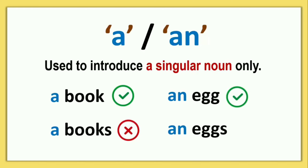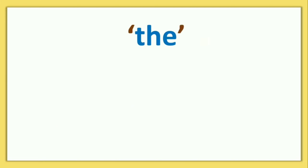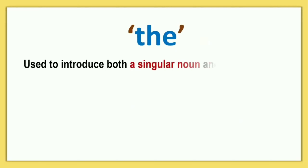Singular noun के लिए, एक ही चीज़ के लिए, A और AN article use होता है। अब हम देखेंगे, THE कब use होता है।